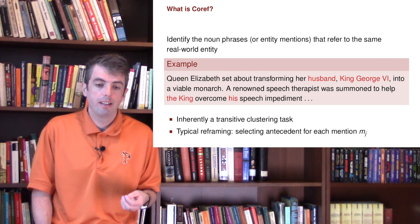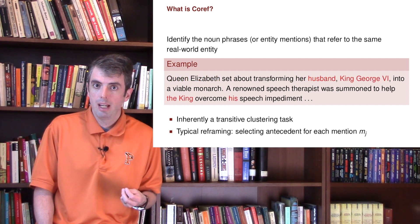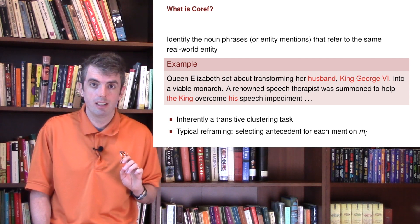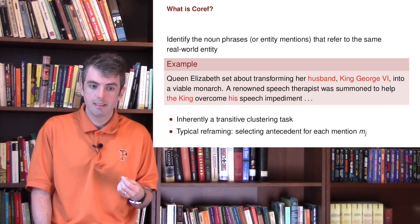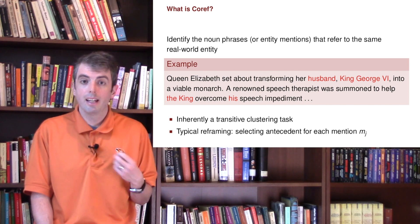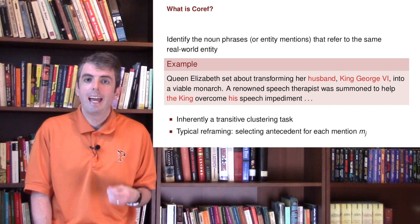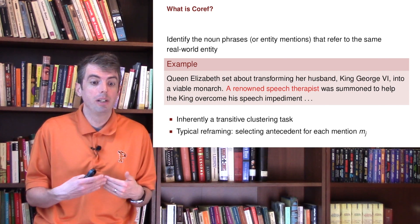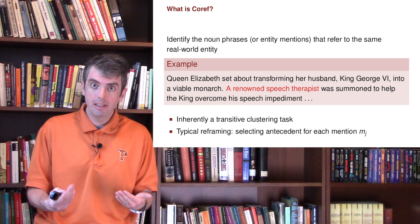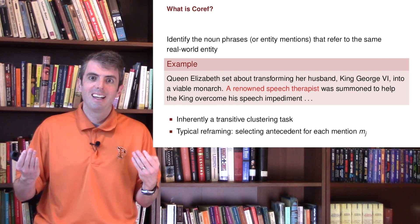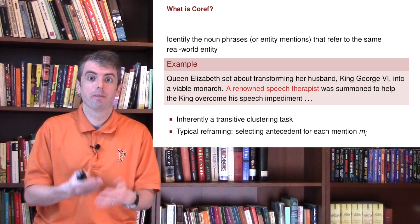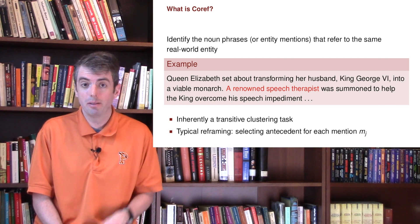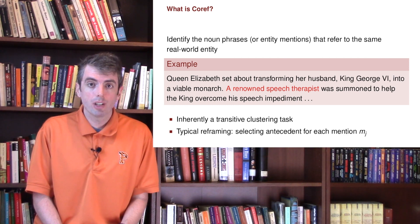Another entity mentioned here is King George VI, but the first time he's mentioned, he's not mentioned by name — he's actually mentioned as the husband of Queen Elizabeth. Later he's mentioned as 'the king' and 'his'. And sometimes you have entities that aren't mentioned by name at all, like 'a renowned speech therapist' — who knows who that is? It does refer to a real-world person, and if you had more knowledge about the situation, you'd be able to figure out whom they're talking about.